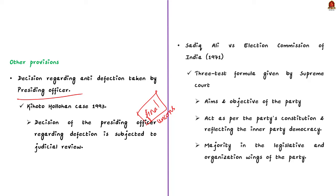The three-test formula includes: first, the aims and objectives of the party; second, whether they act as per the party's constitution and reflect inner party democracy; and third, majority in the legislative and organization wing of the party. This three-test formula can be used to determine which faction is recognized as the original political party by the Election Commission of India. These are important facts to remember about anti-defection law.